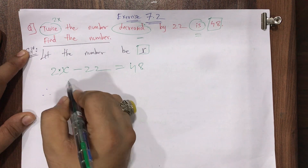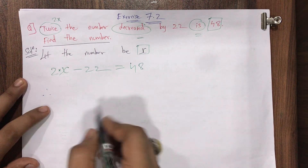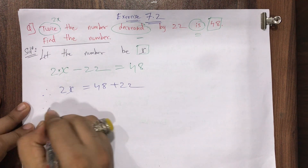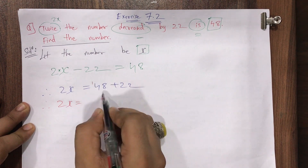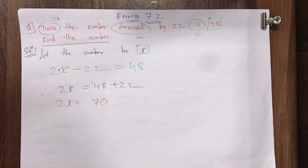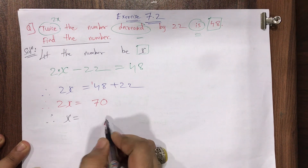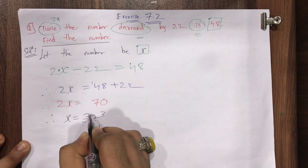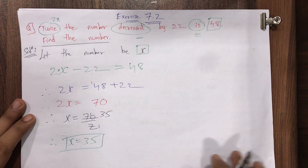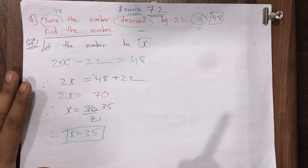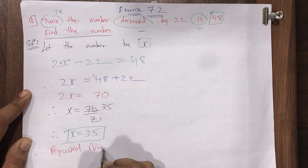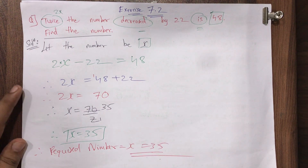Therefore 2x equals 48 plus 22, which equals 70. Therefore x equals 70 divided by 2, which equals 35. Whenever word problems are asked, it is essential that at the end you write the answer in statement form. Therefore, the required number, which we supposed as x, is equal to 35. Pause the video and do it.